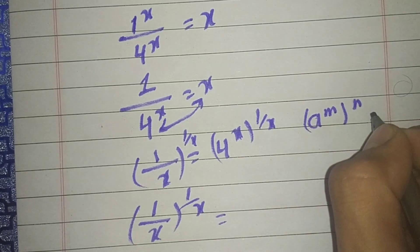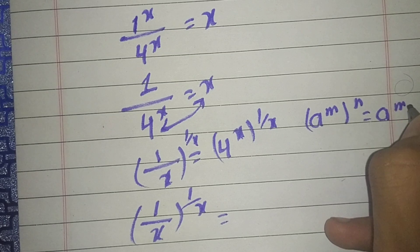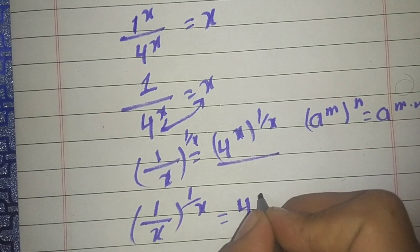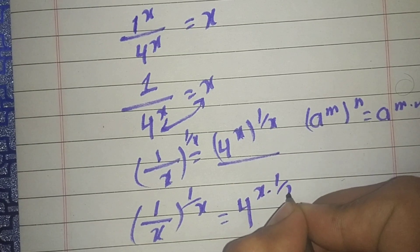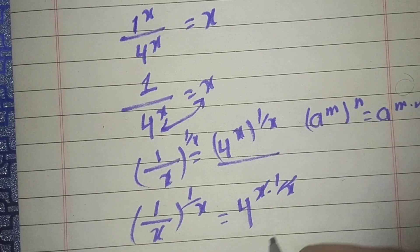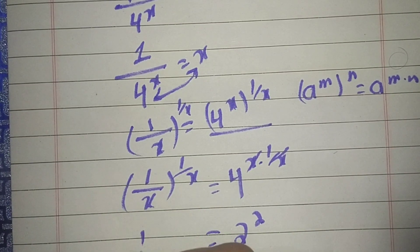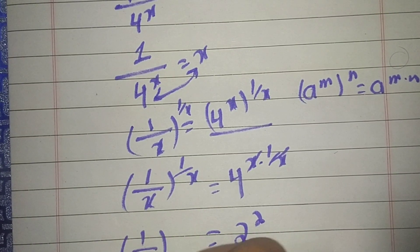We have the property that (a^m)^n equals a^(m×n). We can write this as 4^(x × 1/x). These cancel and we get 4, which equals 2^2. This equals (1/x)^(1/x).